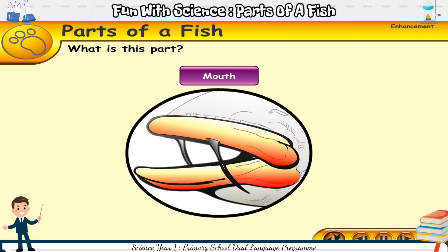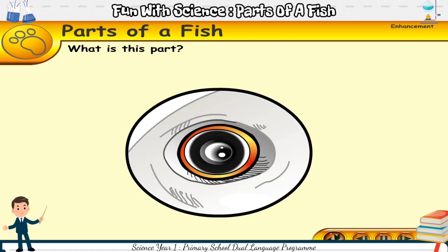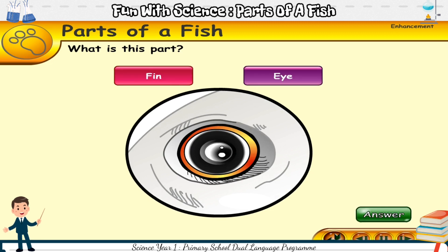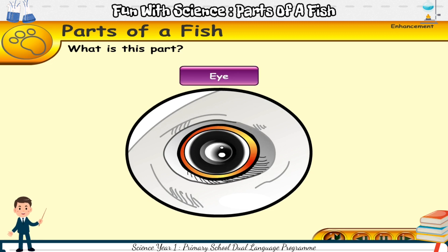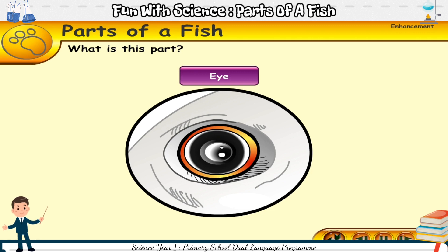This is the mouth of the fish. What is this part — fin or eye? This is the eye of the fish. A fish has two eyes.